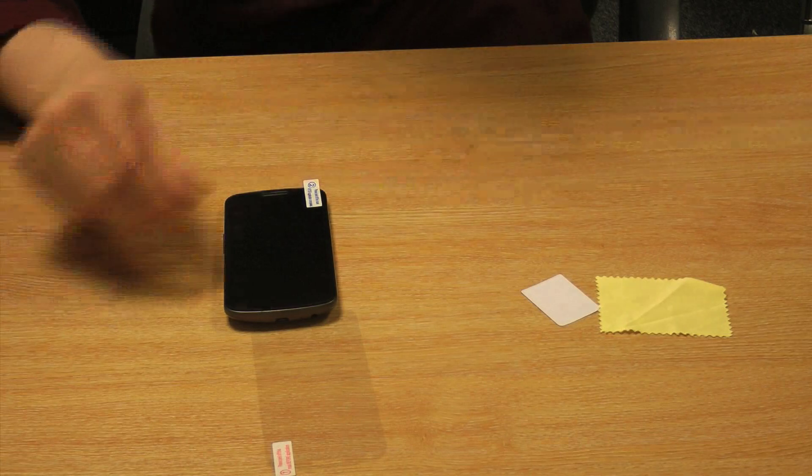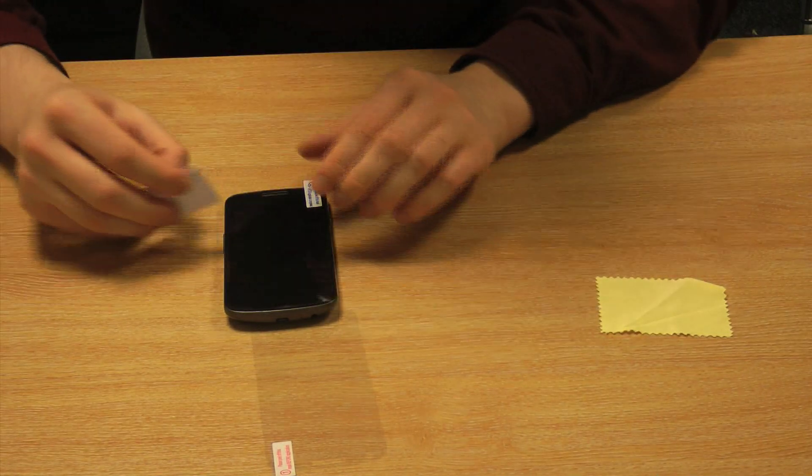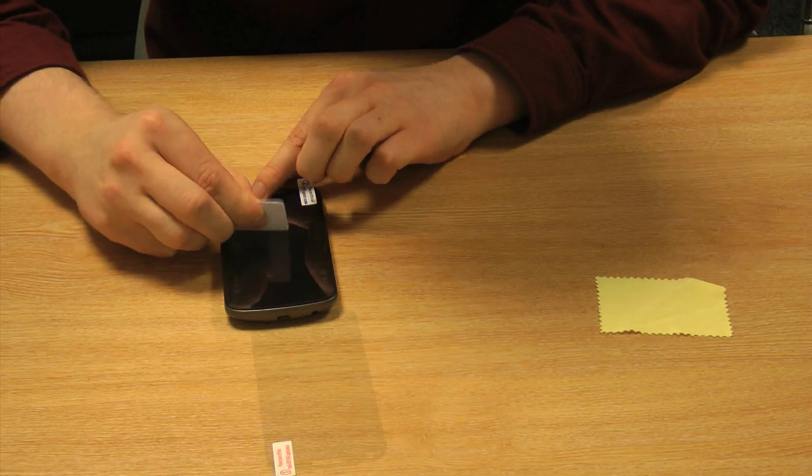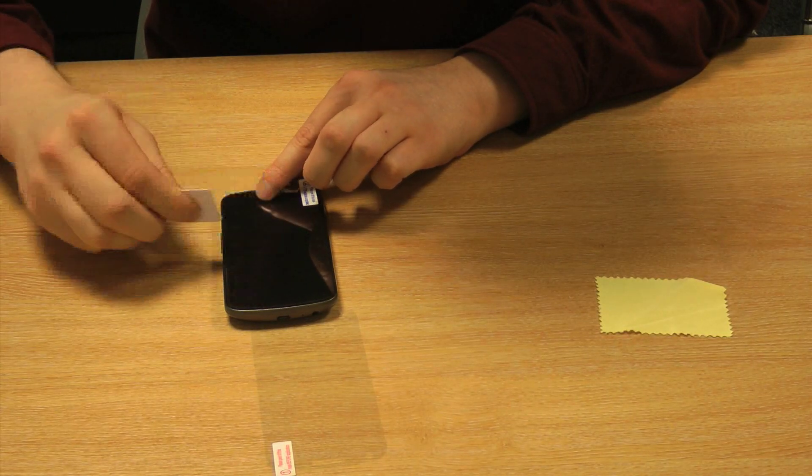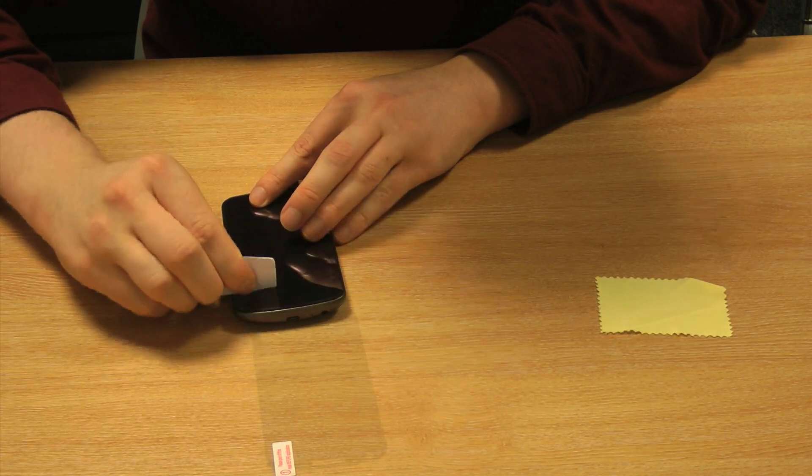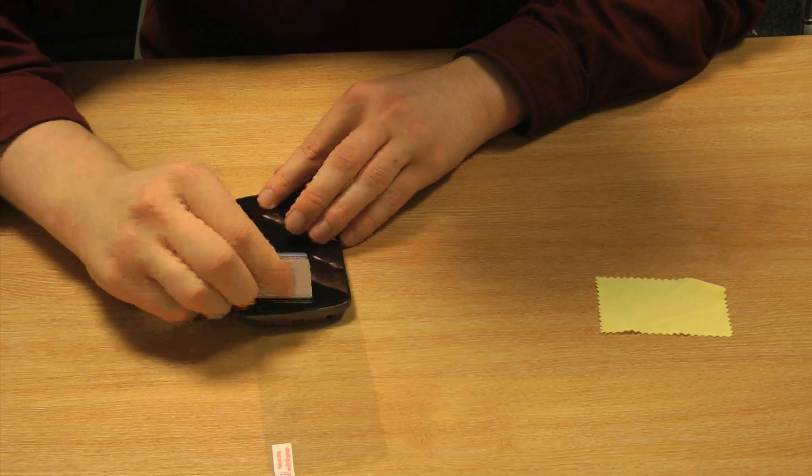As you can see, there's still a few little air bubbles in there, so we're just going to take our applicator card and smooth those out. We're going to push them along the device towards the end. As you can see, those are going to shift along quite nicely.